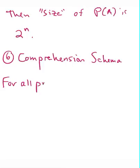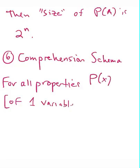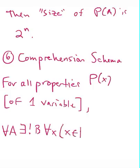For all properties P of X, and this is going to be of one variable, we have the following. For all sets A, there exists a unique B, such that for all sets X, X is in B if and only if X is in A and P of X holds.